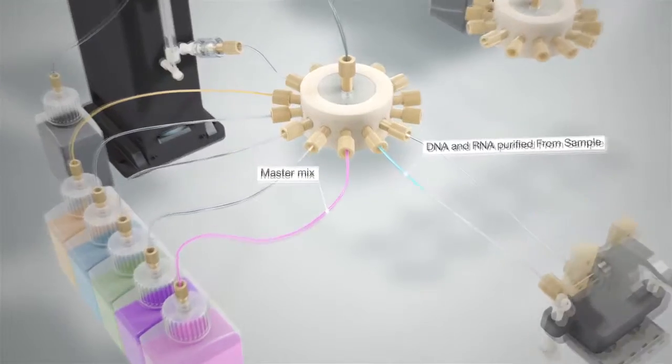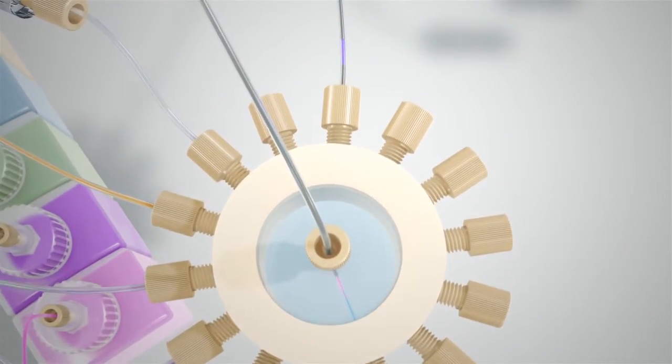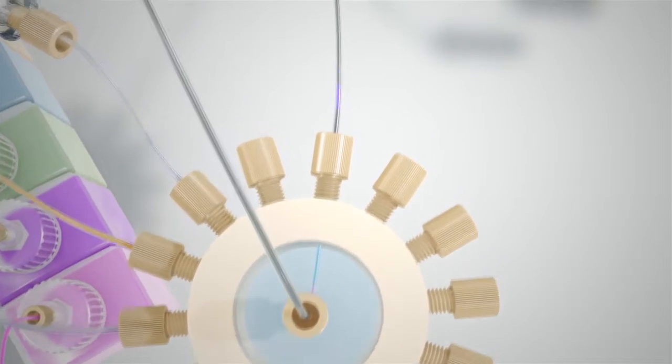The DNA and RNA are mixed with MasterMix at the valve and then this mixture is directed to the same line containing the previously assembled negative control.